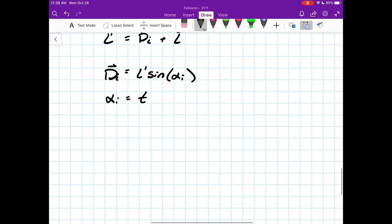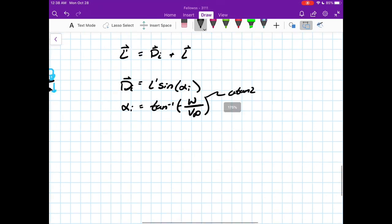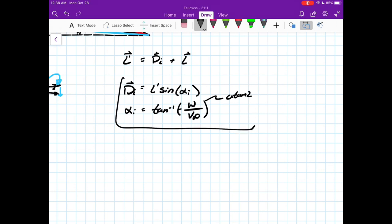If we want to find this induced drag, D induced is equal to L prime sine alpha induced. And alpha induced is just inverse tangent of negative w over V infinity. Always make sure you're in the right quadrant there - this is maybe a job for atan2, you know what I'm saying.